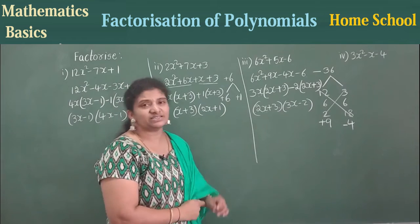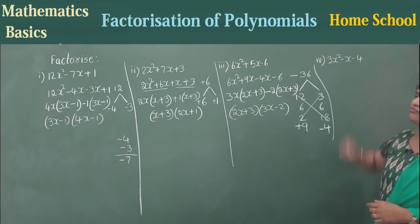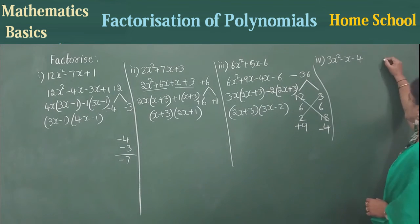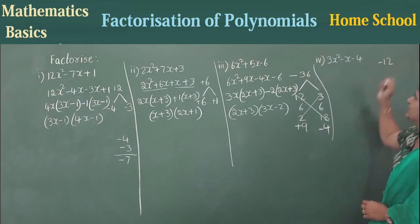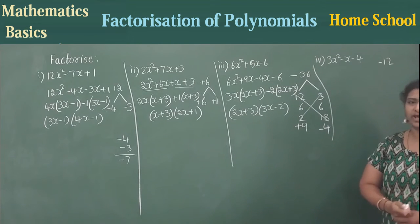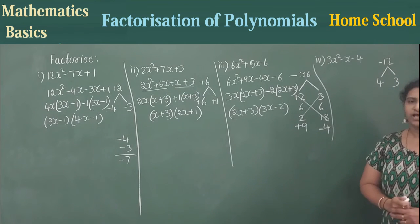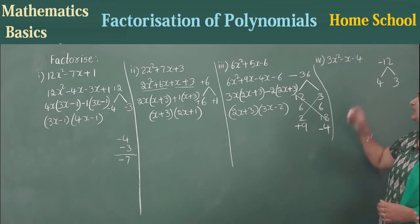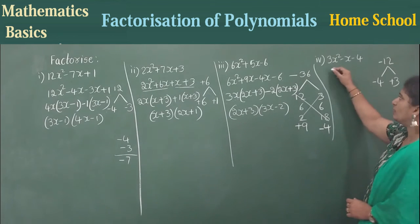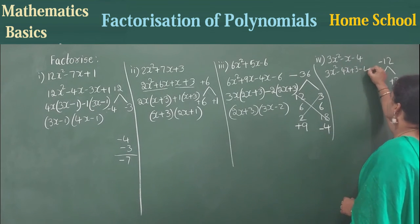See the last problem: 3x² - x - 4. See the numbers: 3 and 4. Multiply: 3 fours are 12, and plus into minus is minus 12. Find factors of 12 such that you get minus 1 in the middle. I will take 4 and 3: minus 4 plus 3 will be minus 1. So write: 3x² - 4x + 3x - 4.